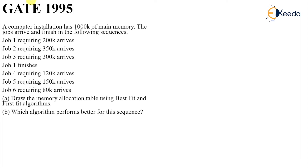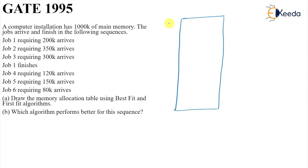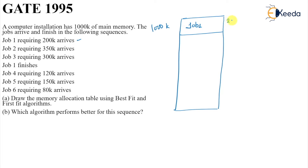The next question: a computer system has 1000k of main memory. Job one arrives requiring 200k, so it gets allocated. Job two requires 350k and is allocated next. So that occupies up to 650k.